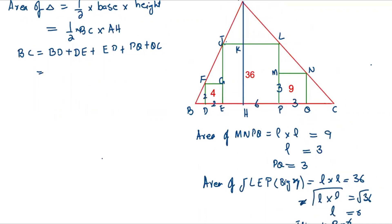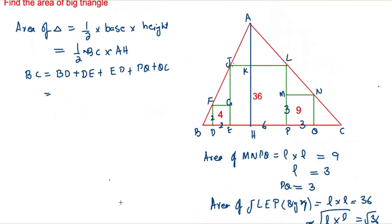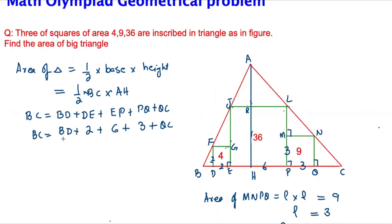The total length BC equals BD plus DE (which is 2) plus EP (which is 6) plus PQ (which is 3) plus QC. We still need to find BD and QC.